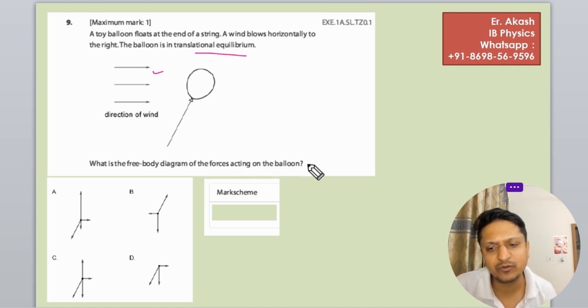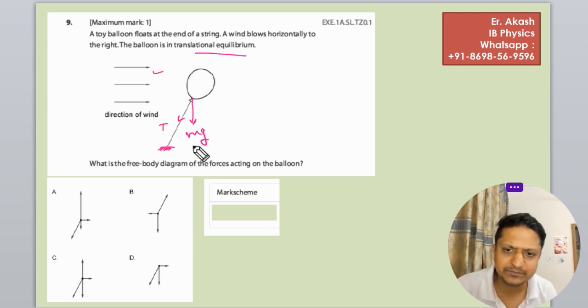Basically, we have to make the free body diagram of this balloon. We have to see what forces are acting on it. First, there is tension in the string - we assume it is hinged somewhere. Then there is the mass mg, which is the gravitational force.